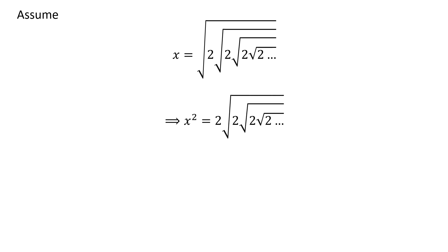Taking square of both sides we get square of x is equal to 2 times square root of 2 times square root of 2 times square root of 2 and so on. As square root of 2 times square root of 2 and so on is equal to x as per our assumption, so square of x is equal to 2 times x.